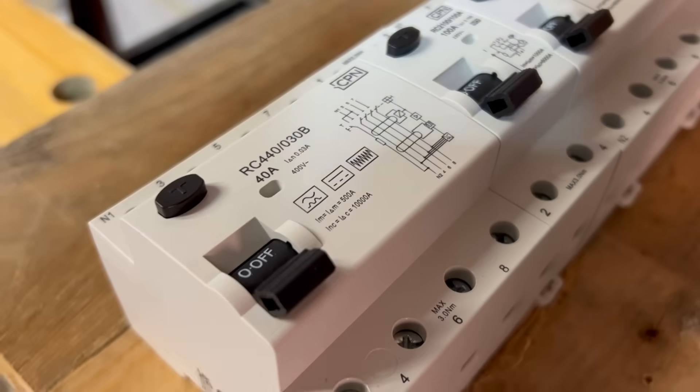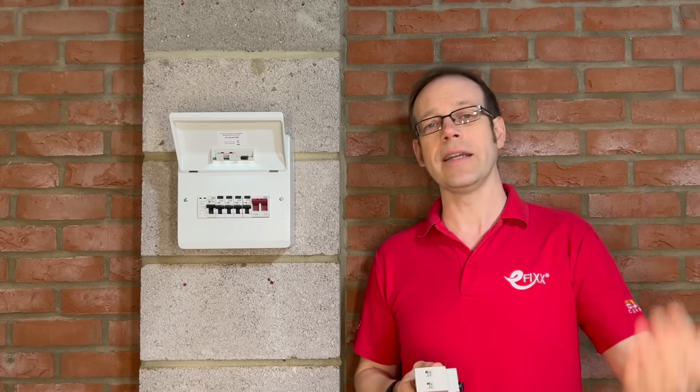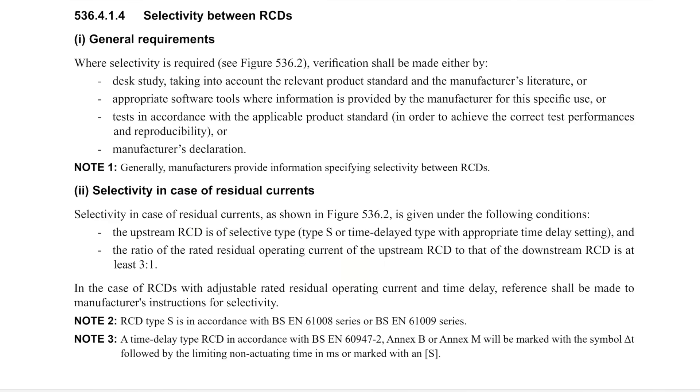However, this time delay by itself is not enough to prevent both devices tripping in the event of a fault as it's likely to hold off tripping for a matter of milliseconds rather than seconds. So to achieve proper selectivity it must also comply with the second part of that reg.